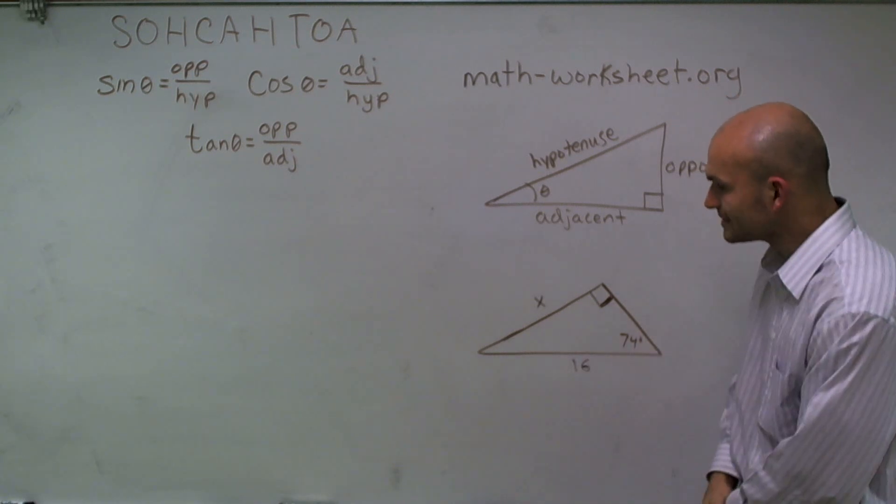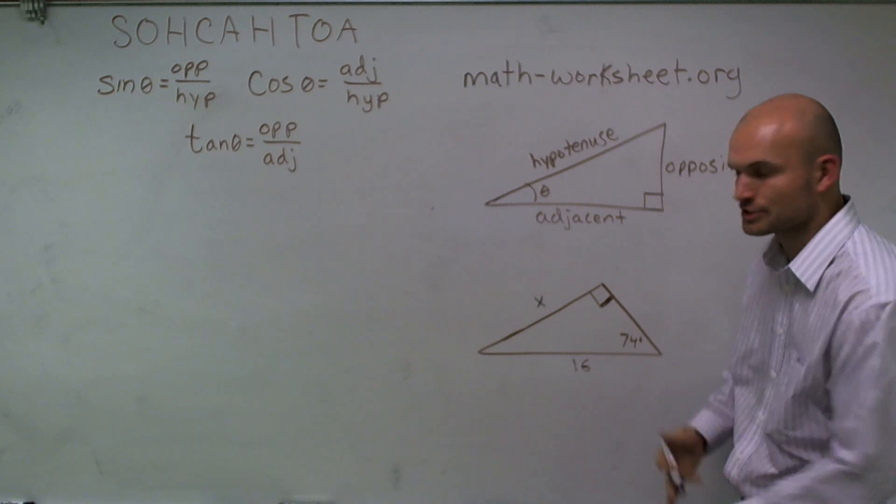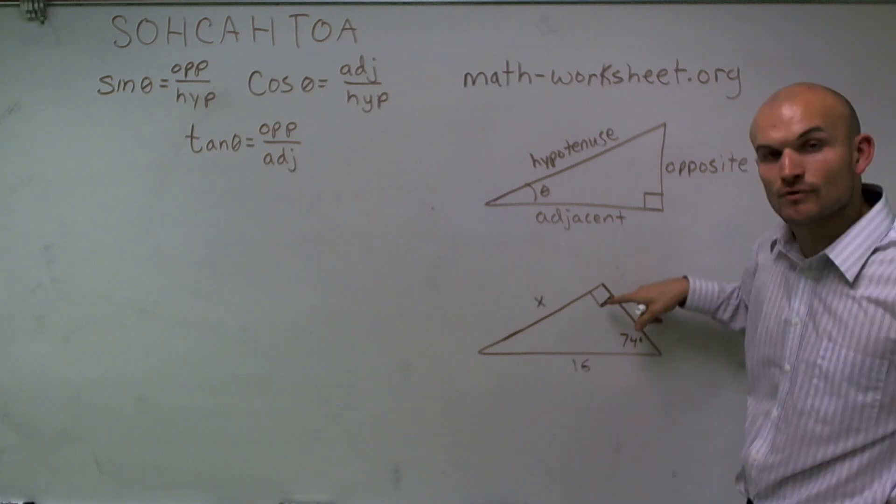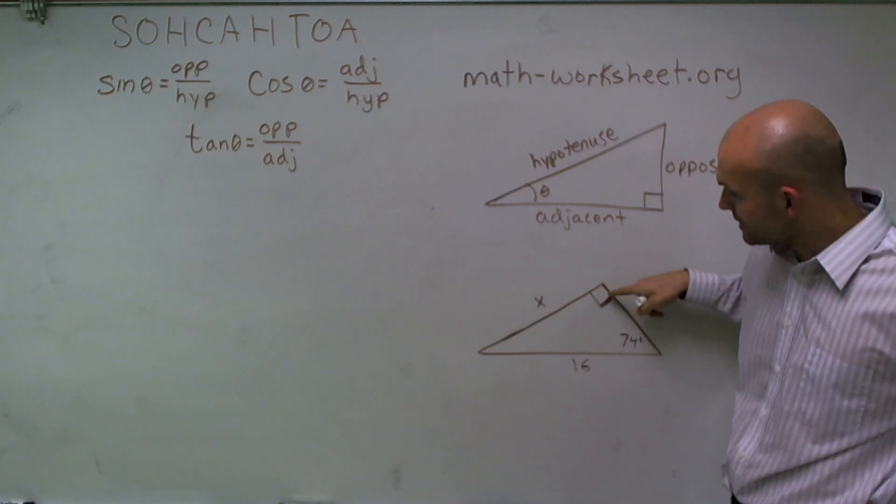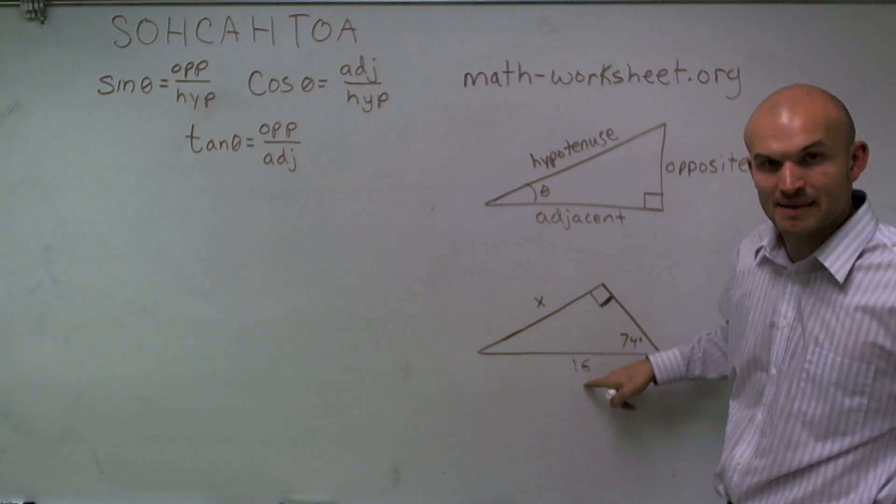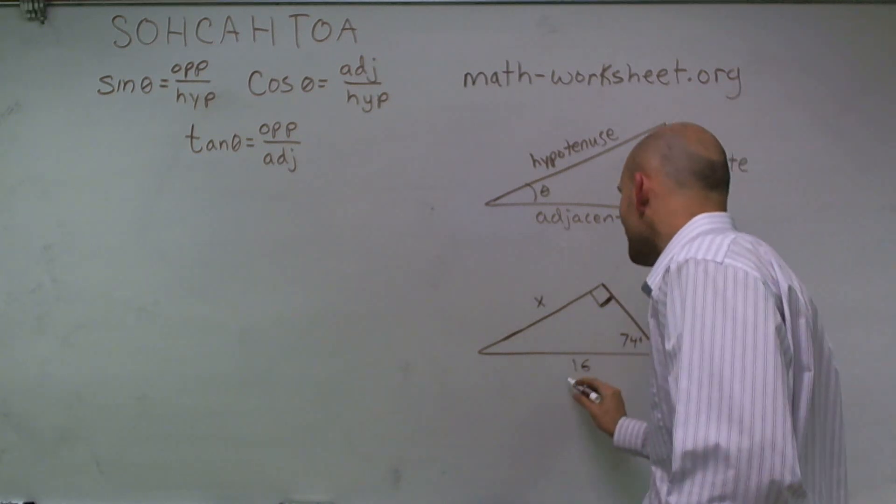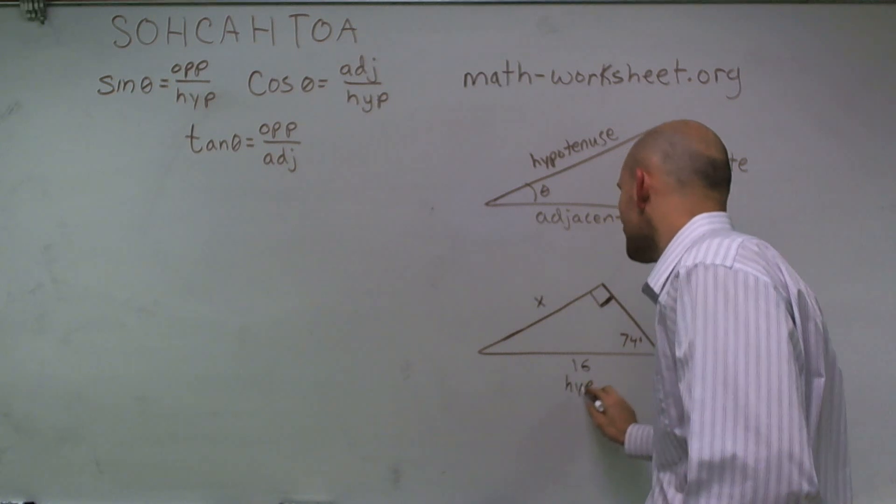Here's my triangle. First, I need to determine what I have. I have a right angle, so I know that the side length across my right angle is my hypotenuse. Therefore, I'm given a hypotenuse, which is 16.